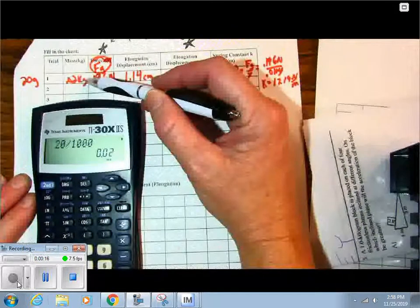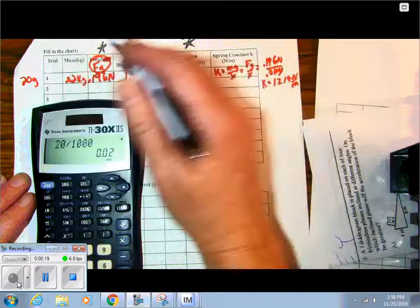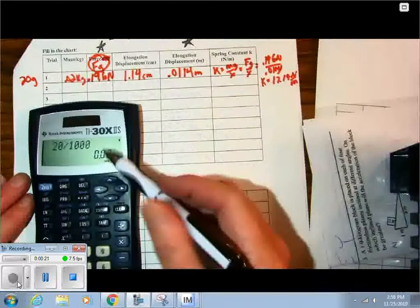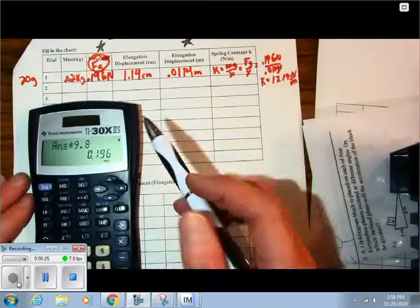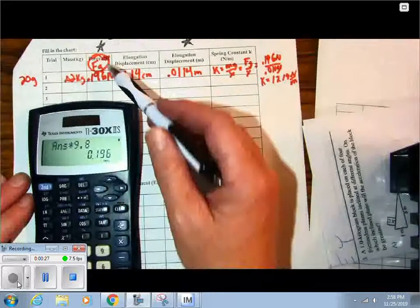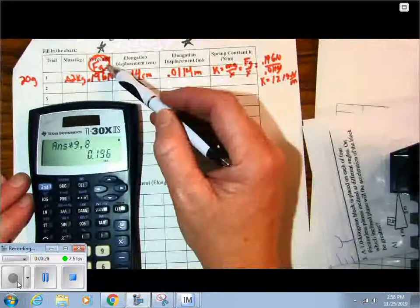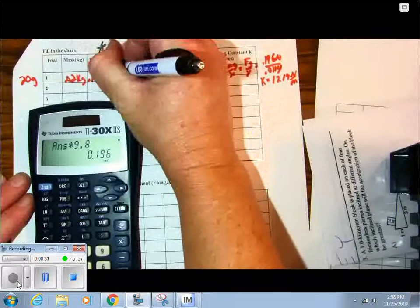Then I took that number and I multiplied it by 9.8. So I did this number times 9.8. That got me 196 newtons. That's force of gravity.